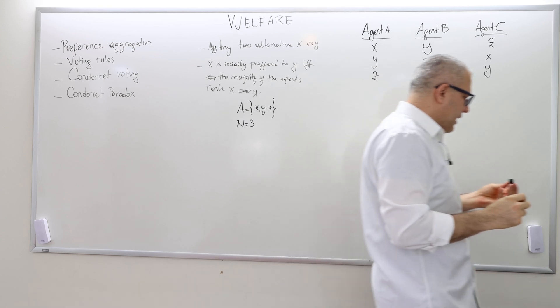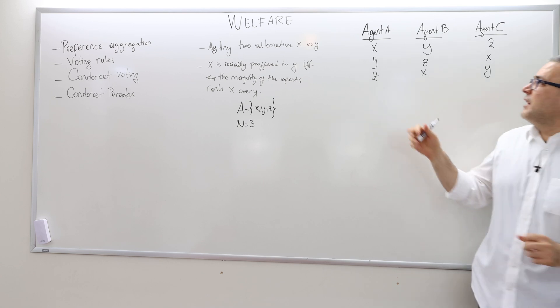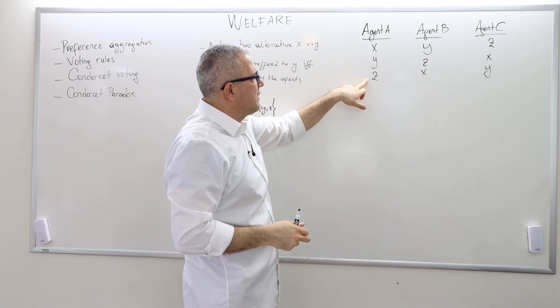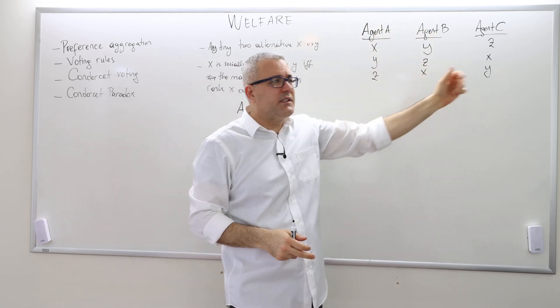And in fact, I name the agents as agent A, B and C. These agents' preferences are given as follows. Agent A ranks X as the first best, Y as the second best, Z as the third best. This is agent B's ranking. This is agent C's ranking.